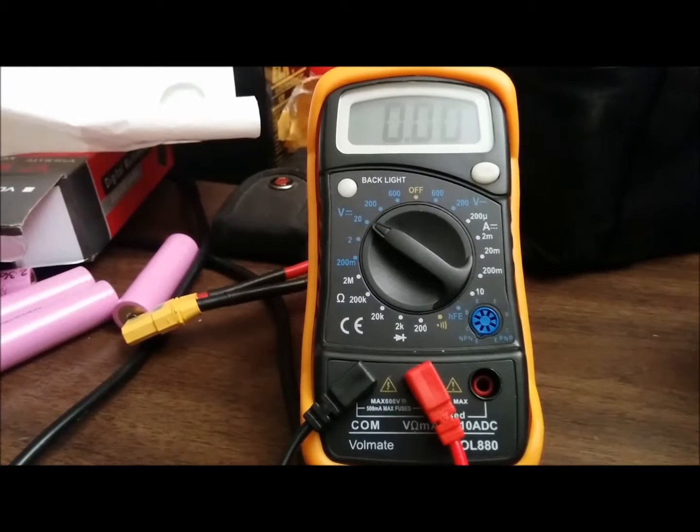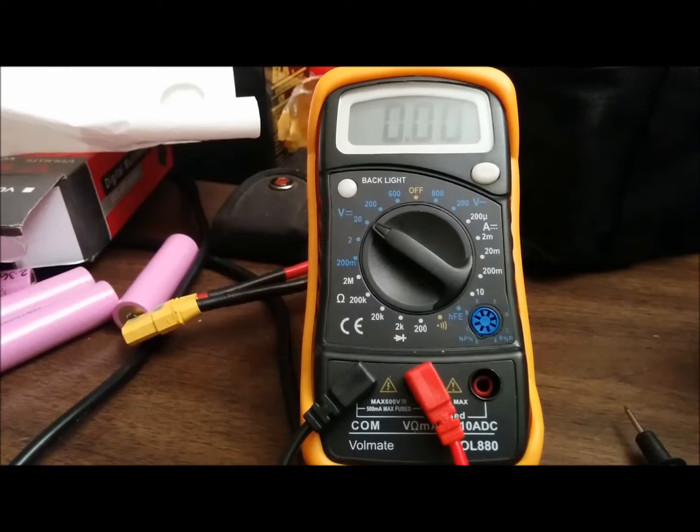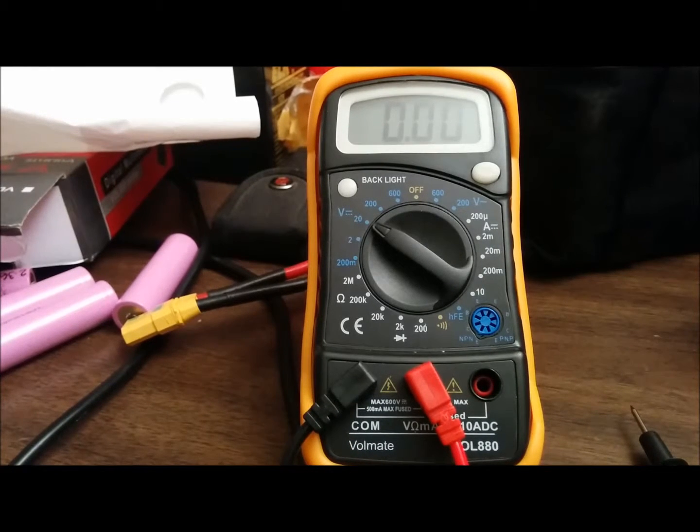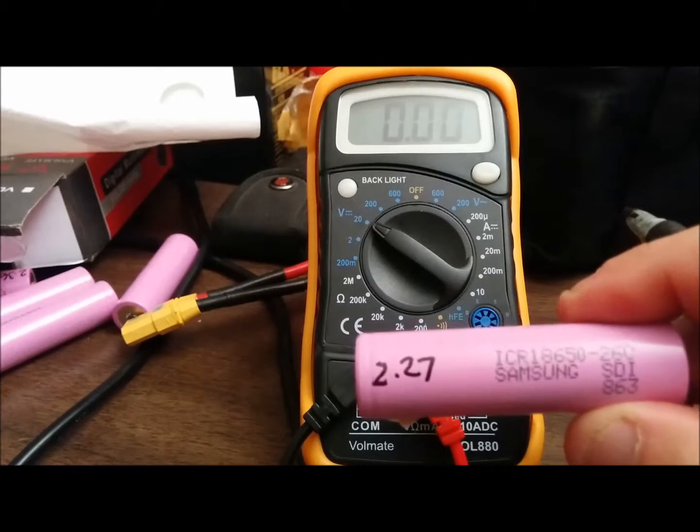Oh and there we go, so the voltage is 2.26, looks like 2.27. So what I do is I have a marker, so I'm gonna mark it. That's the voltage, 2.27 looks like. And I'm just going to put it right there for now.